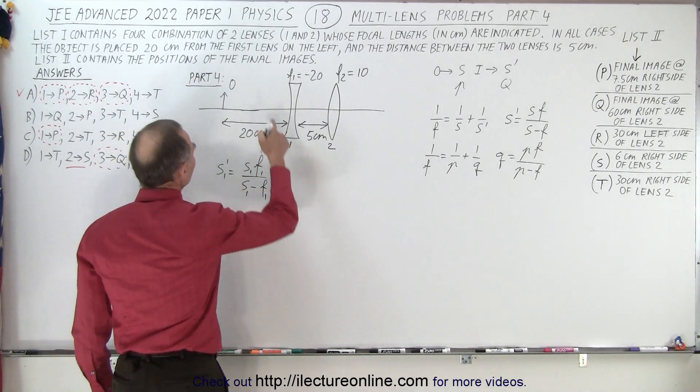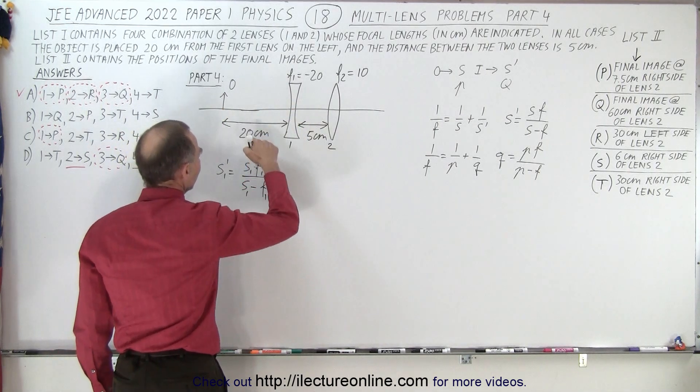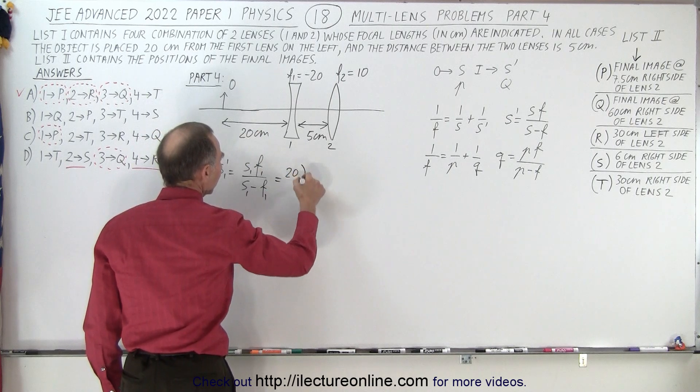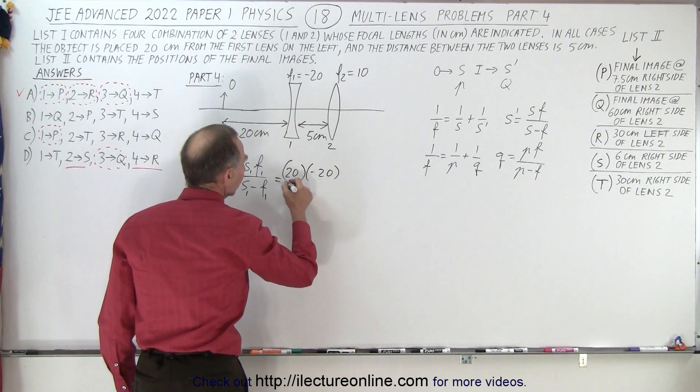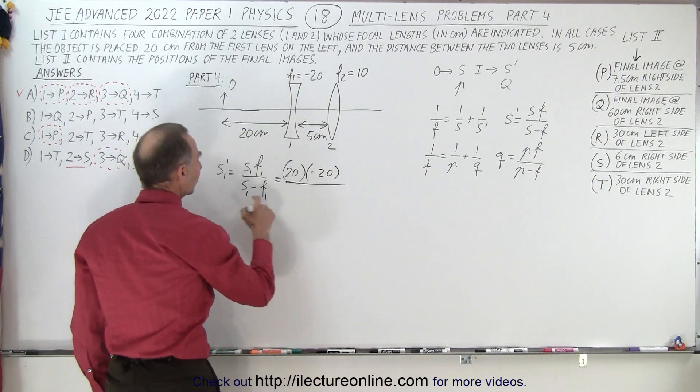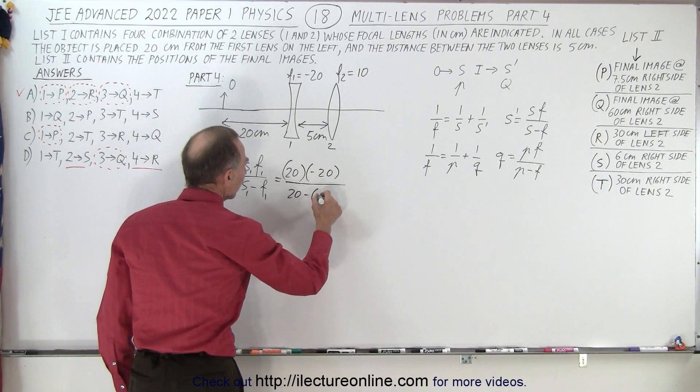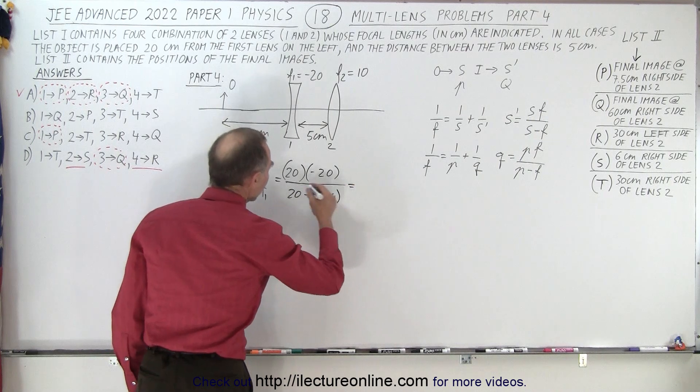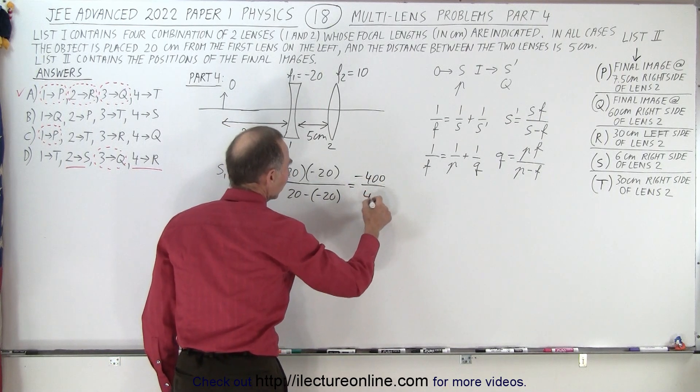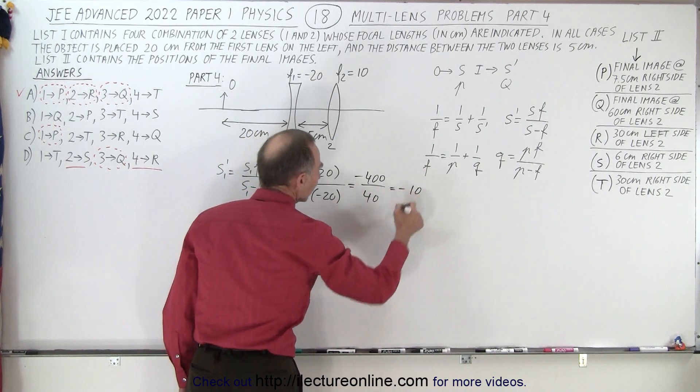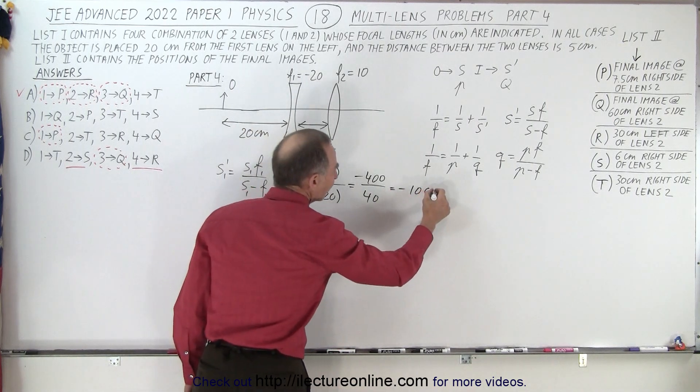And so since the object is to the left of the first lens by 20 centimeters, that becomes the object distance. The focal length of the first lens is minus 20. It's a diverging lens. S1 would be 20 minus a minus 20. So this becomes minus 400 divided by a positive 40, which is minus 10, which means minus 10 centimeters.